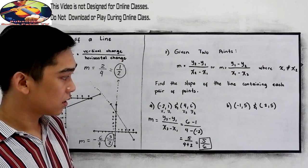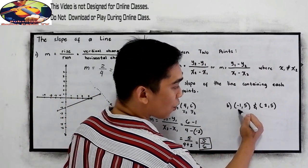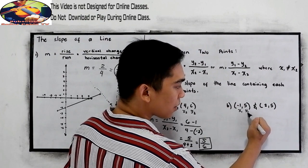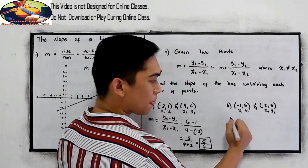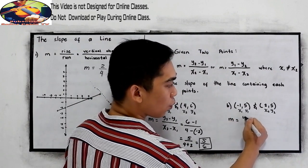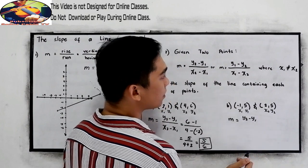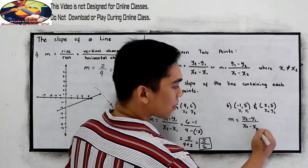Next, letter B. This will be our x sub 1, y sub 1, x sub 2, y sub 2. So our m is equal to y sub 2 minus y sub 1 all over x sub 2 minus x sub 1.